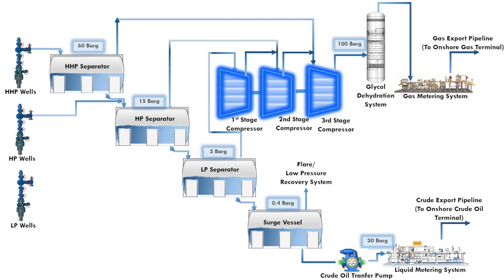Production from the high pressure wells, or HP wells, will flow into the HP separator. Production from the low pressure wells, or LP wells, will flow into the LP separator. All the production will subsequently go through the similar separation, compression, and pumping prior to being exported to onshore.